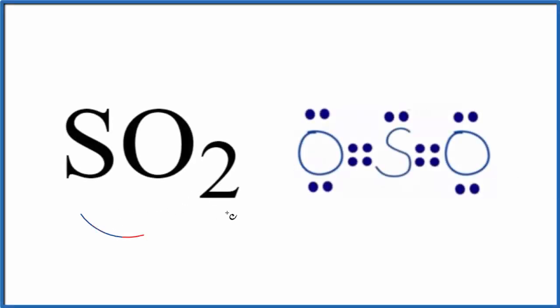Let's take a look at the bond angles for SO2. This is sulfur dioxide. When we're looking at the bond angles, we need to start with a valid Lewis structure.